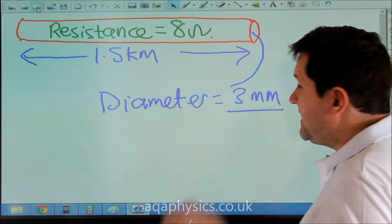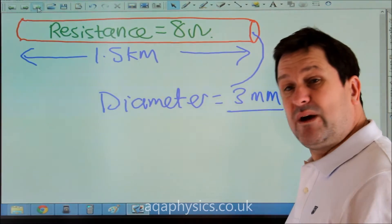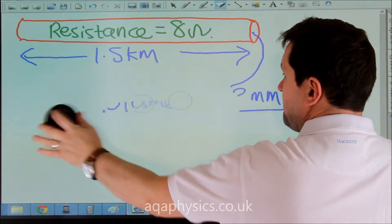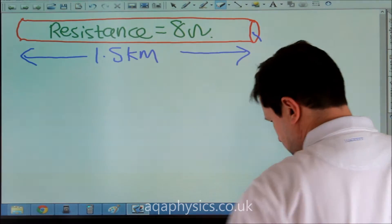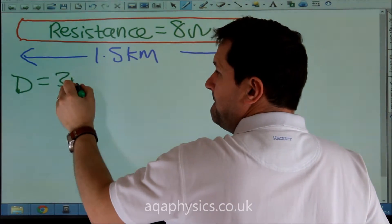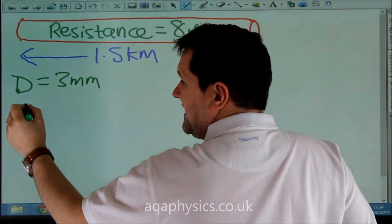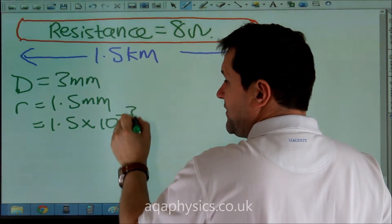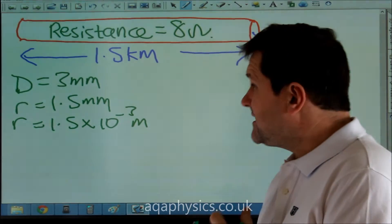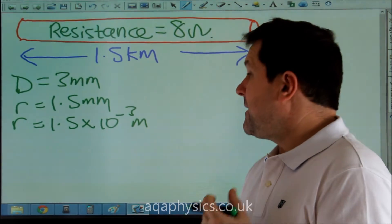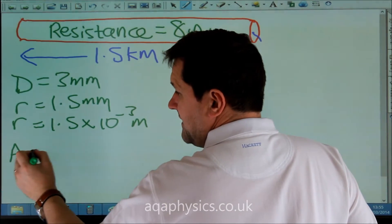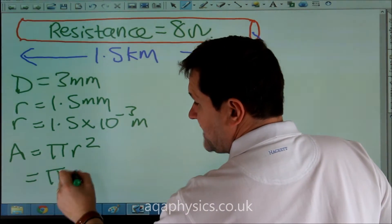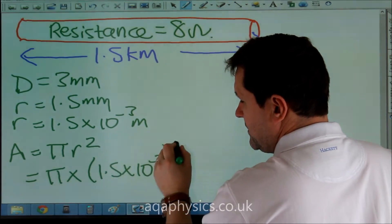If our diameter is 3 millimeters, the first thing I would do is work out my cross-sectional area A. My diameter was 3 millimeters. That means my radius is 1.5 millimeters, which is 1.5 times 10 to the minus 3 meters. I would then say, well, my area equals π r squared, which is π times 1.5 times 10 to the minus 3 squared.